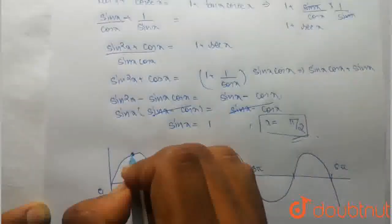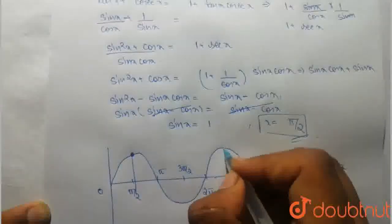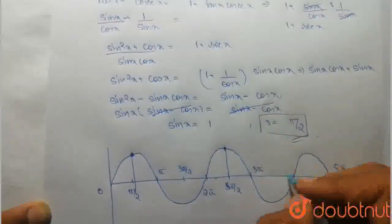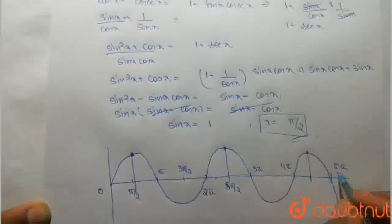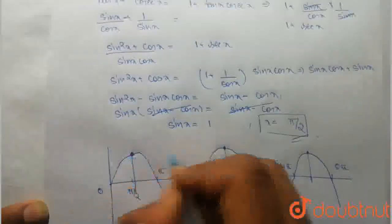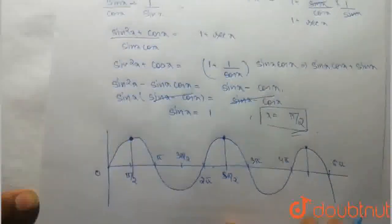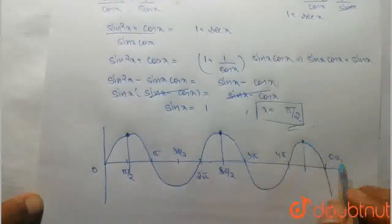This is 1 here. Sin x is equal to 1 at π by 2, 5π by 2, 9π by 2. From 0 to 5π, how much value? 3. And from 0 to 10π, how much value?